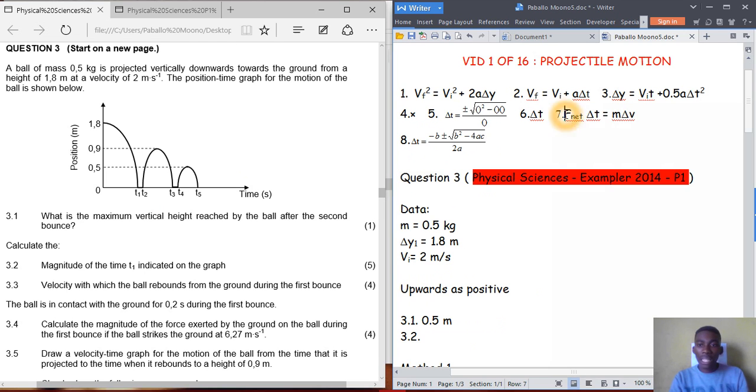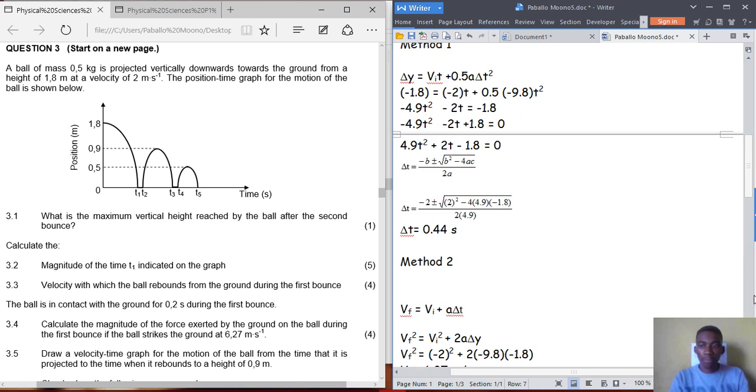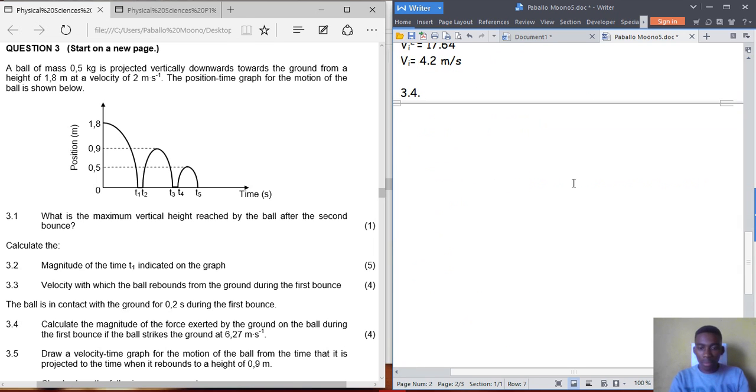We can find force from the impulse formula: F times delta t equals m times delta v. Delta t is 0.2, and the mass of the ball is 0.5 kg.